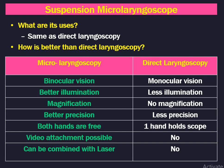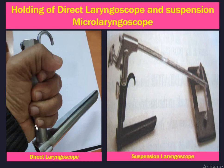Direct laryngoscopy offers monocular vision only, viewing with one eye. There is less illumination and no magnification. Precision is less because one hand holds the scope, one hand holds the instruments, and you still need to take biopsy. There is no video attachment and it cannot be combined with laser.